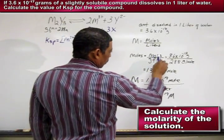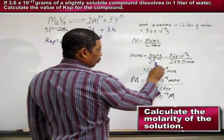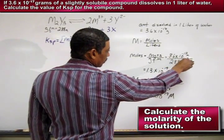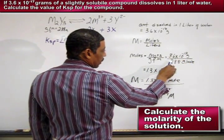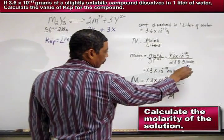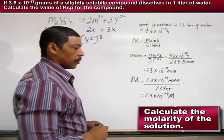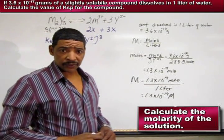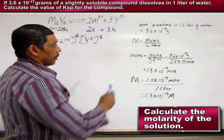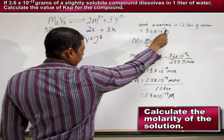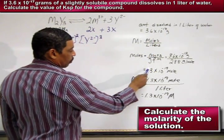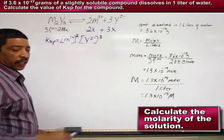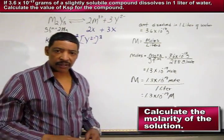Substituting these values into the formula, we will generate the following. 3.6 times 10 to the -17 grams divided by 288 grams per mole will equal 1.3 times 10 to the -19 moles. So the 3.6 times 10 to the -17 grams actually represents 1.3 times 10 to the -19 moles of the compound that actually dissolves.